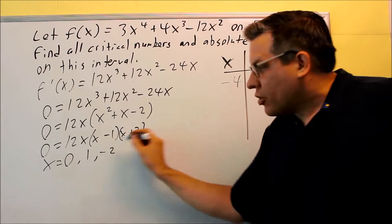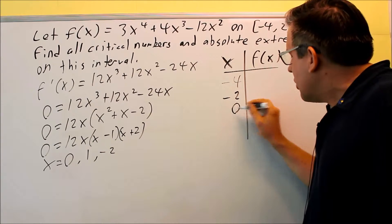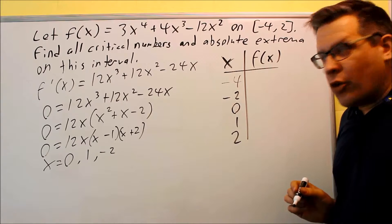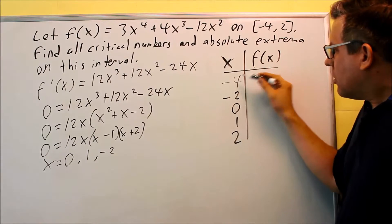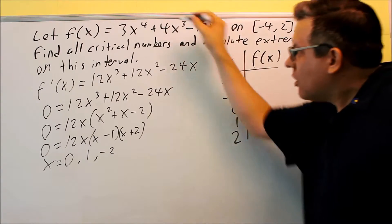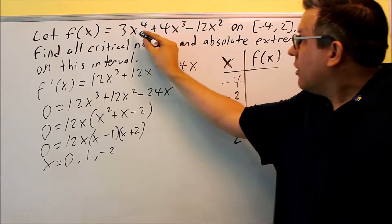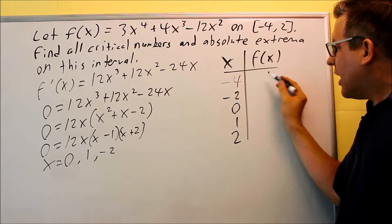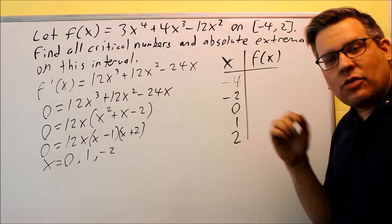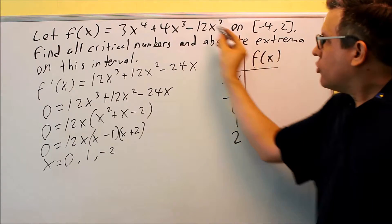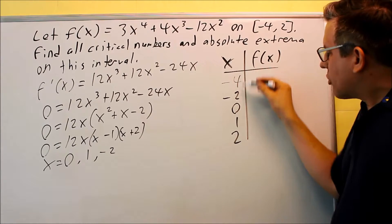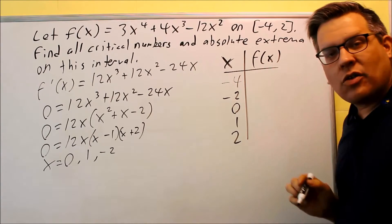I'm going to do negative 4 first, that's my a value, that's my left endpoint. I want to put the critical numbers there, negative 2, 0, and 1. And then finally, I have 2, and 2 is going to be the right endpoint. I want to take these numbers, and I'm putting them into f of x. Notice I'm not using the derivative, I'm using the original function. So, I've got to put negative 4 in here for all the x's, evaluate that, do the same thing with negative 2, 0, and so forth. If you have a graphing calculator, I do allow you to use that in this class. You can scroll through the tables and just write the values down that way.